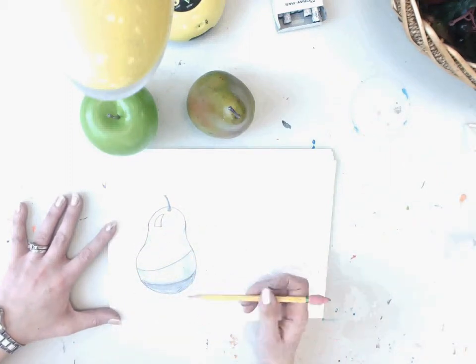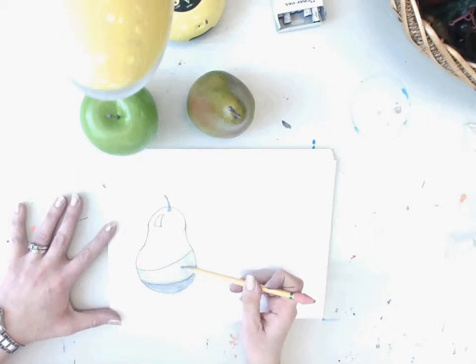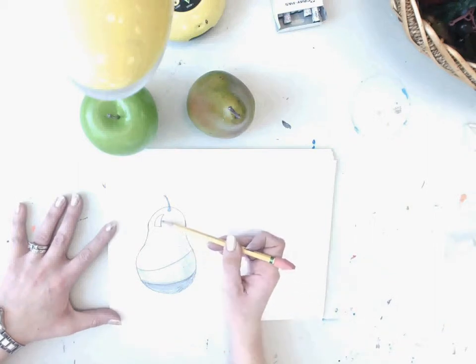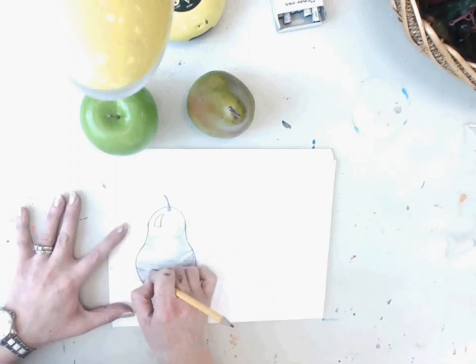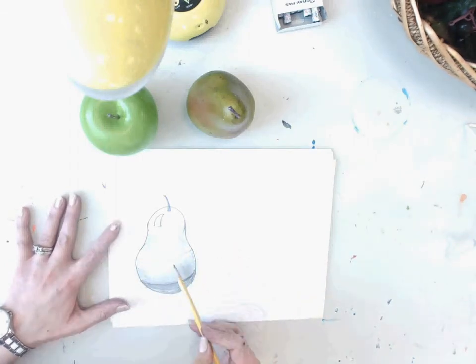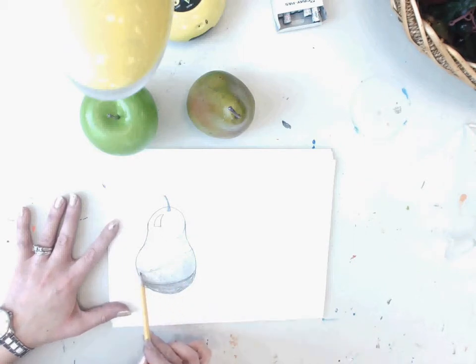So now what I have is a dark, a medium, and a light tone, and I also have a white highlight. I'm going to erase my pencil line here so my tones blend a little bit more evenly.